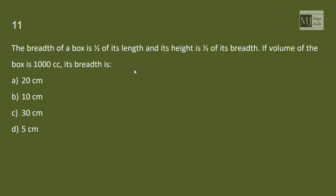The breadth of a box is half of its length. We have length then breadth is l by 2 and its height is half of the breadth that is l by 4. Volume of the box, volume we know is length into breadth into height, l cube by 8 equals 1000, l cube is 8000, therefore l is cube root of 8000 that is 20. Find the breadth. Breadth is l by 2 that is 10 centimeter.